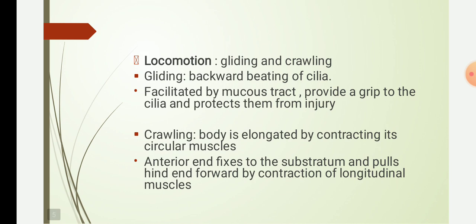Locomotion in Planaria is of two types: gliding and crawling, since they cannot swim. In gliding, the cilia present on the ventral surface beat backward, forming muscular waves that pass over the body from front to rear. Gliding is also facilitated by the mucus tract secreted by the mucus glands opening on the ventral epidermis, which provides grip to the cilia and protects from injury to the substratum. During gliding, the worm keeps its head slightly elevated.